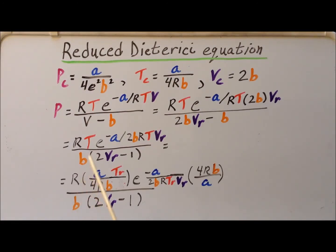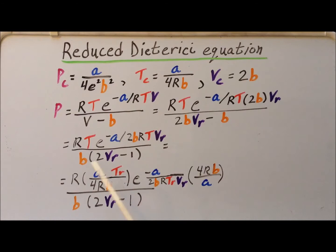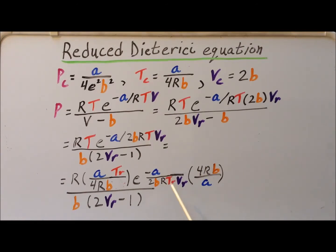Next, we replace the temperature T by the product T sub C times T sub R, and we recognize that T sub C is simply A divided by 4RB. So here we have the replacement for T in the denominator of the expression. It's a little more complicated in the exponent of e because the temperature is in the denominator, so we replace T by T sub R — this is the reciprocal because it's in the denominator.